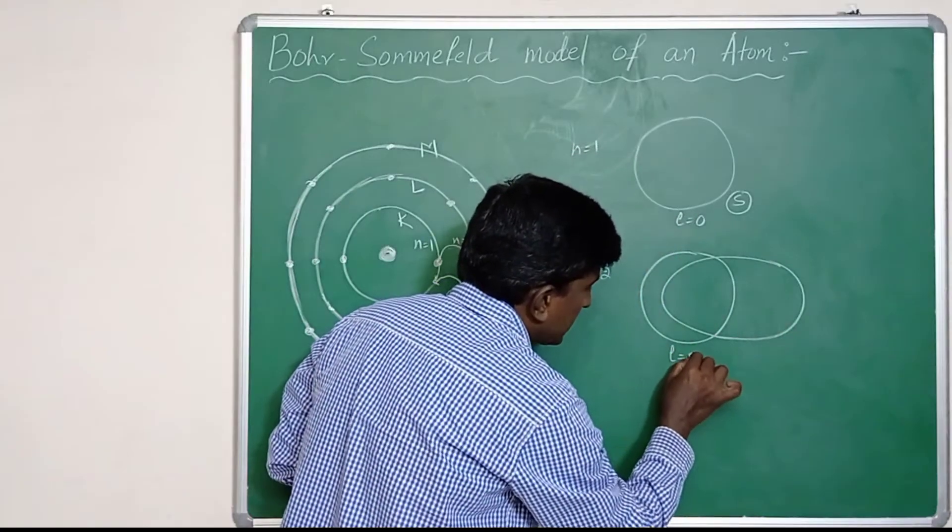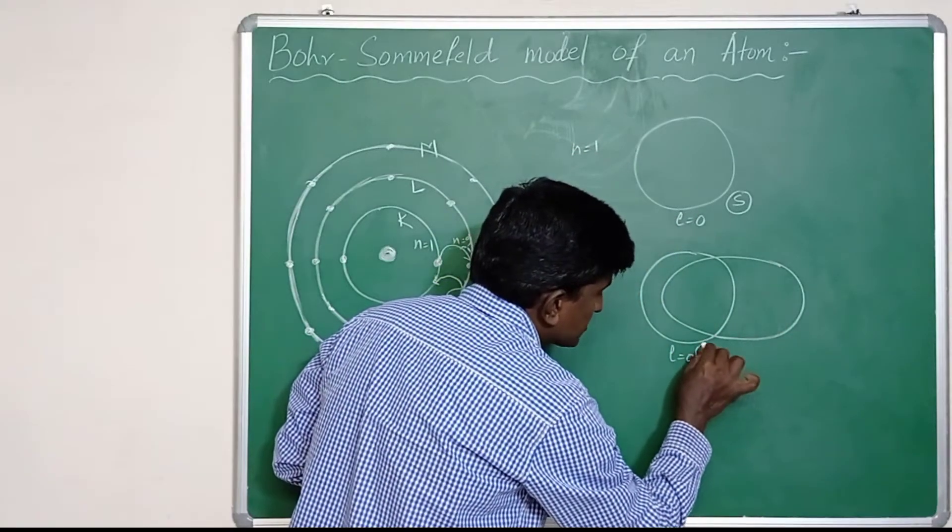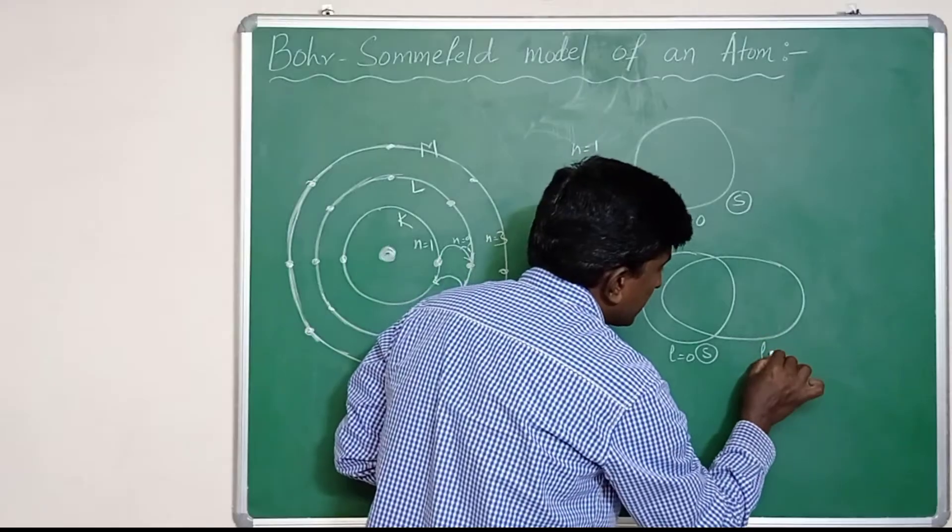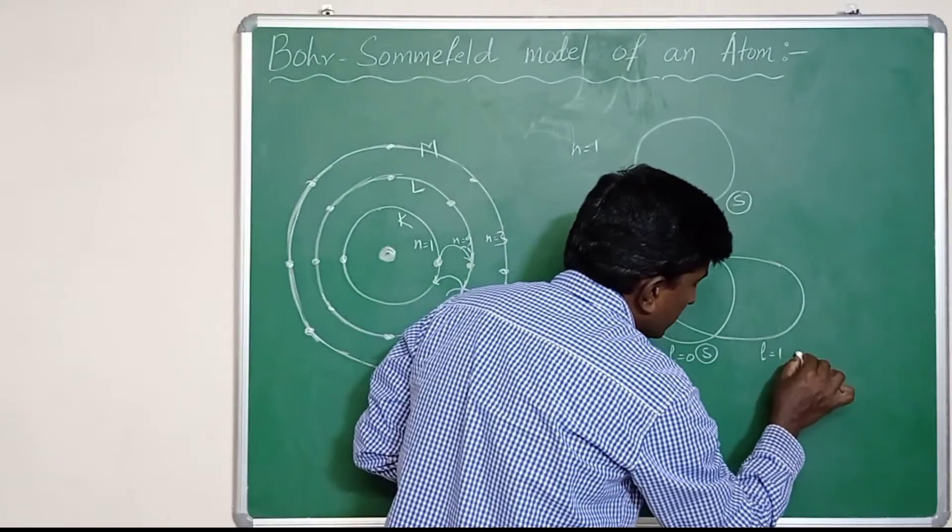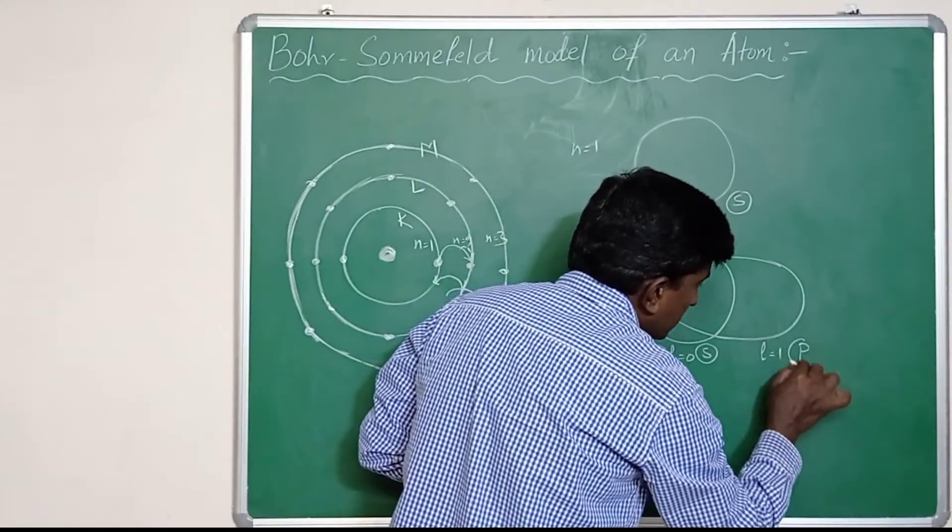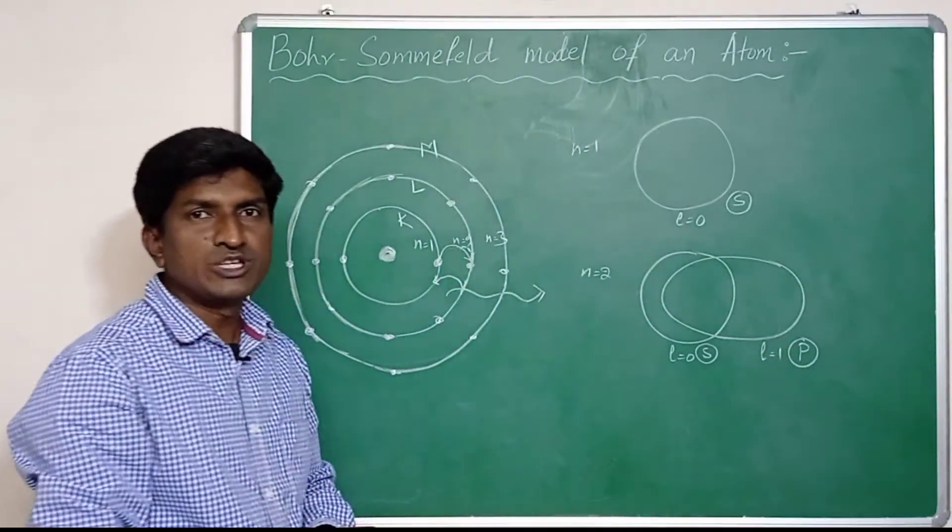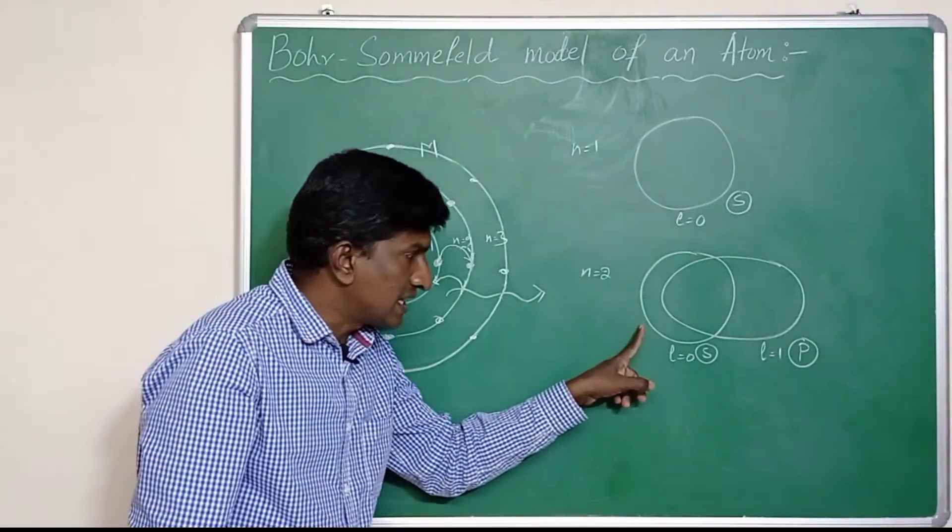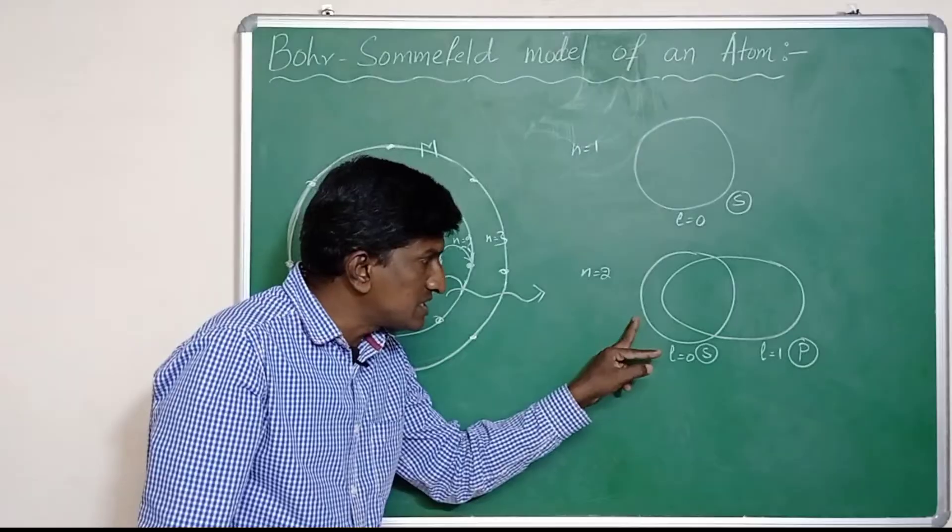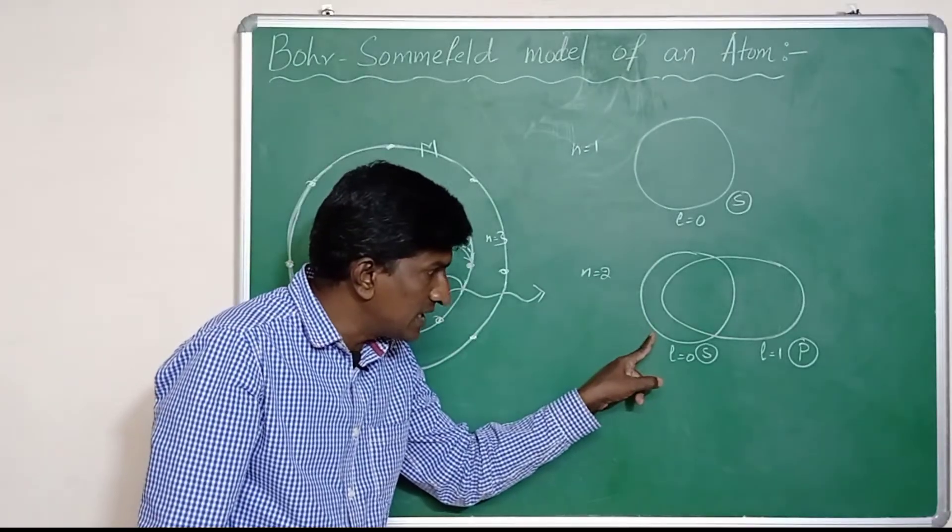This is called p subshell, which means the second Bohr orbit splits into two: one is circular, one is elliptical.